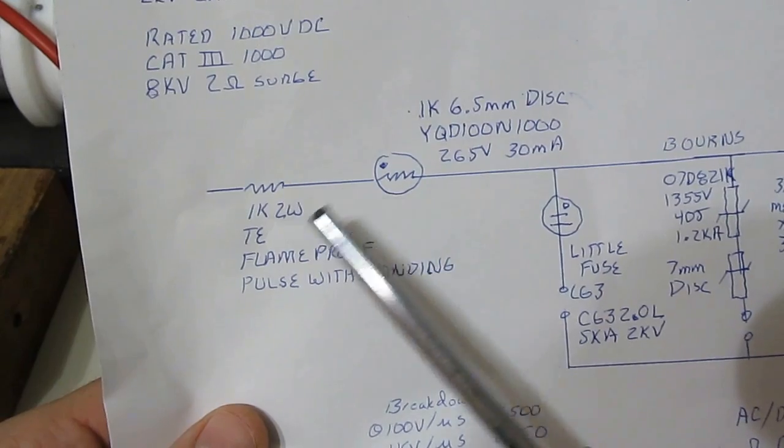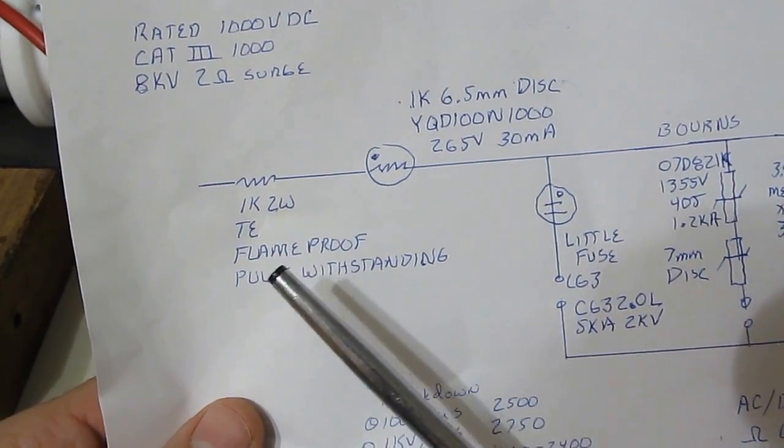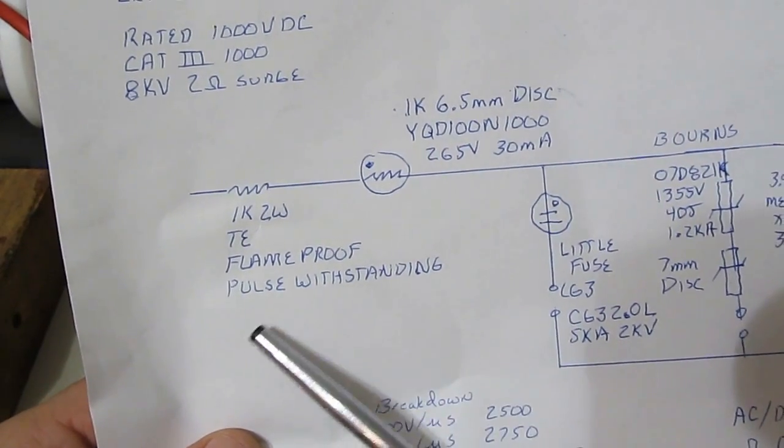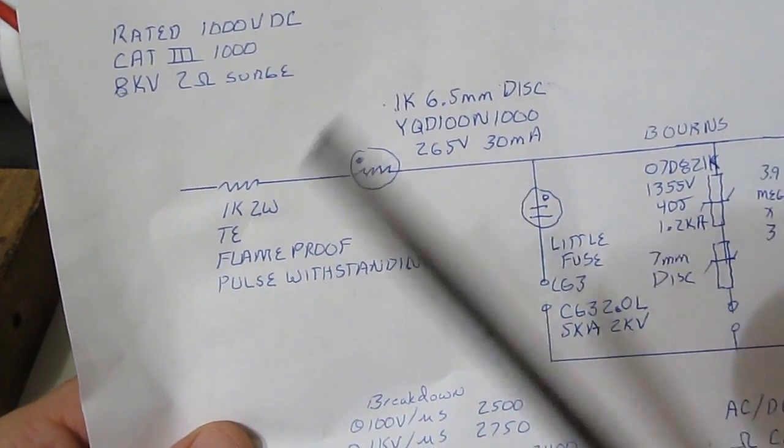I'll be using a 1k 2 watt resistor. This will be made by TE. This resistor is flame-proof and it's pulse withstanding. This resistor is designed to handle a high-energy pulse.